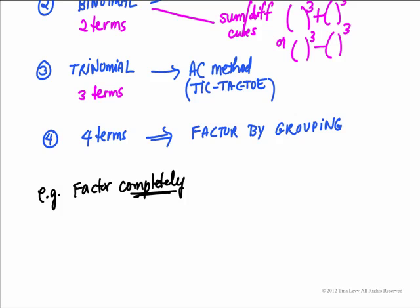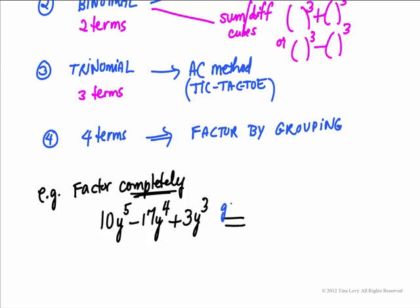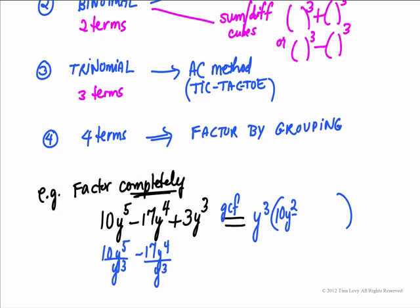For our first example, factor completely: 10y⁵ minus 17y⁴ plus 3y³. The first step is we factor out the greatest common factor, which in this case is y³. When you factor out y³, you divide each term by y³: 10y⁵ divided by y³ is 10y², negative 17y⁴ divided by y³ is negative 17y, and 3y³ divided by y³ they cancel, giving plus 3. You've now done the first step.